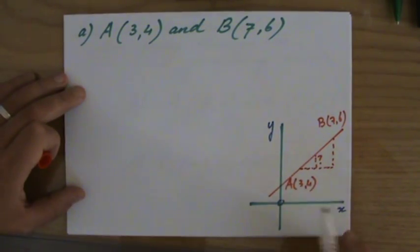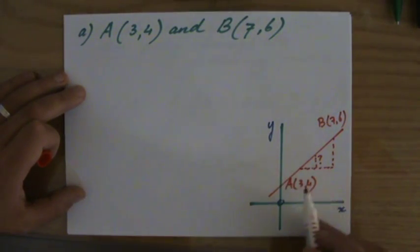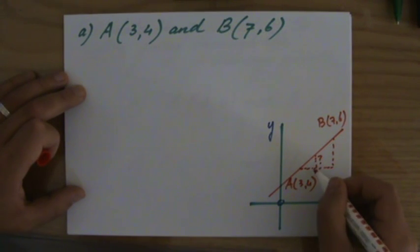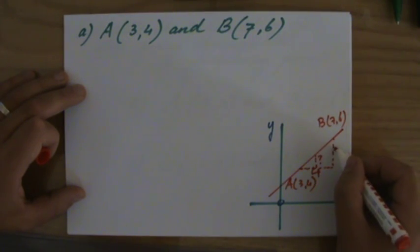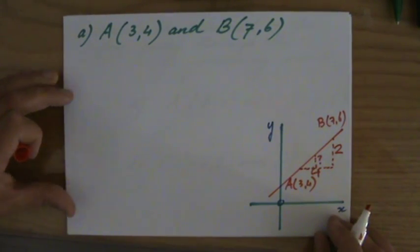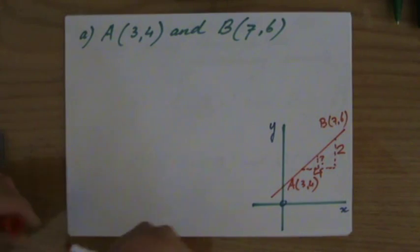In this situation, he goes how many steps to the right from three to seven? So he's going four steps to the right, and when he goes four steps to the right he goes from four to six. So he's going two steps up.